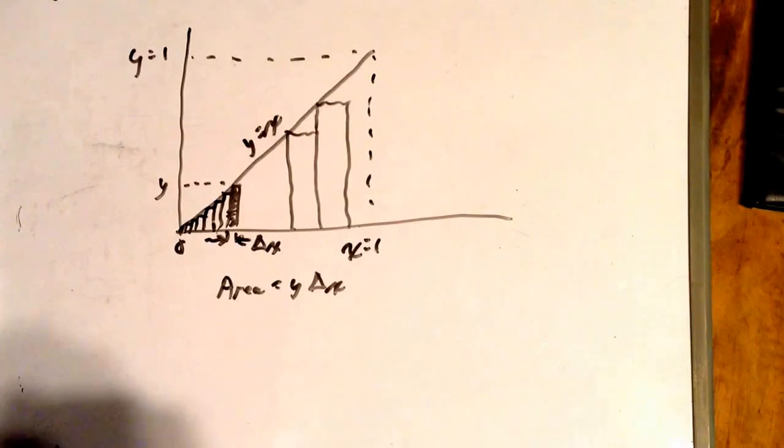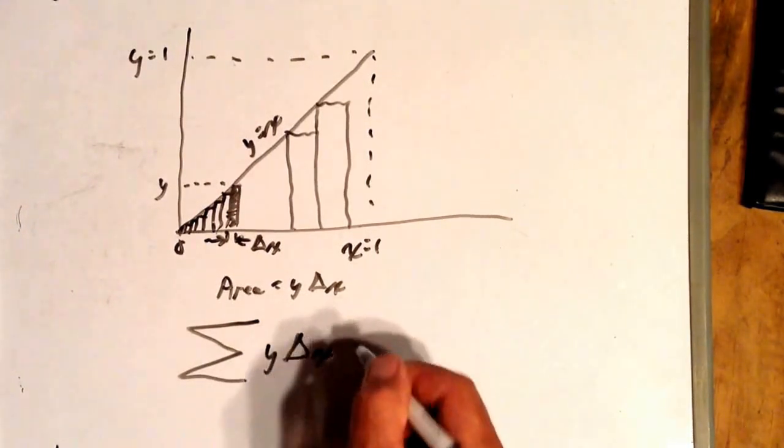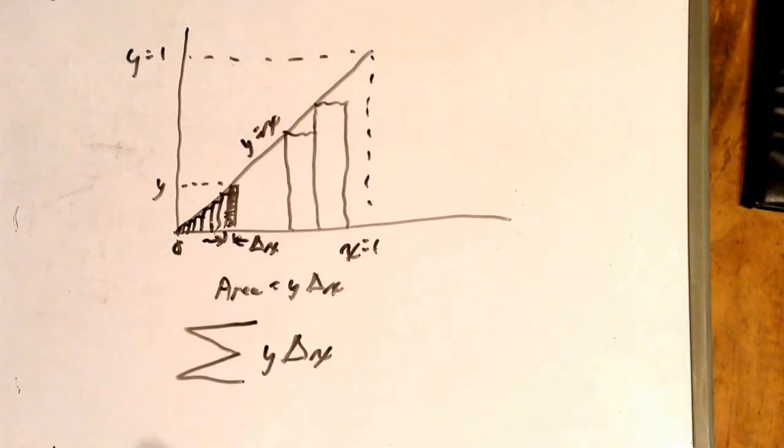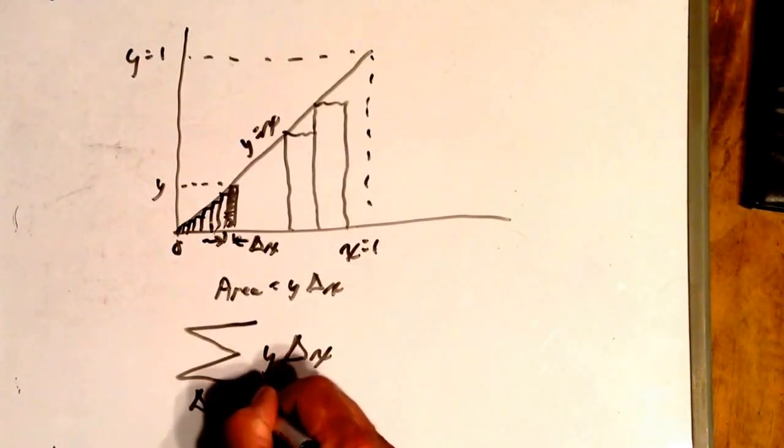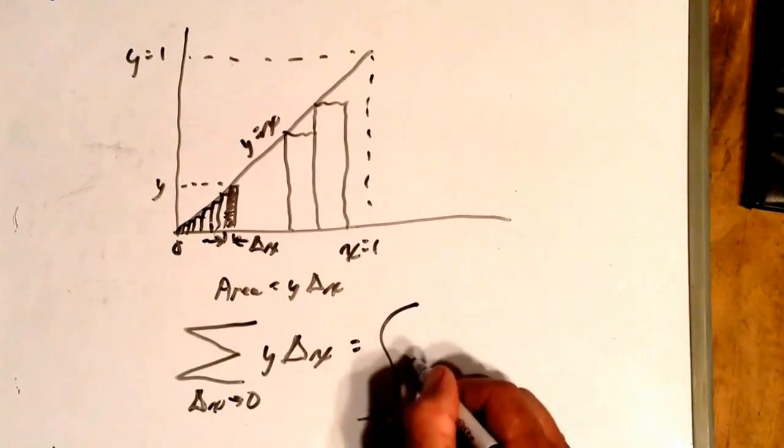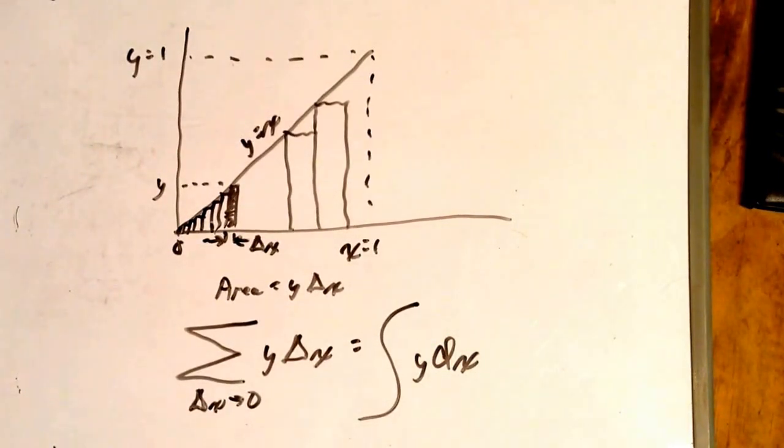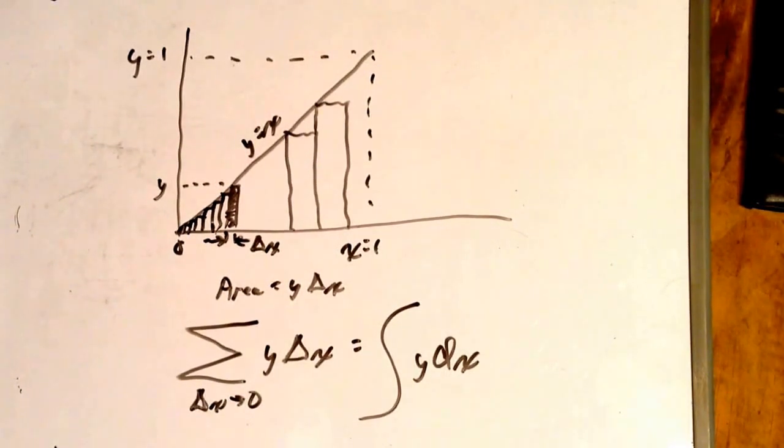The mathematical way of saying this is the sum of y delta x, which means adding up all these little areas of all these delta x's as delta x approaches zero, is equal to the integral of y dx. This Greek letter sigma here is used to mean the sum of. And this symbol, looks like a giant s, is used to mean the integral of. So the sum of all these infinitely narrow slivers areas equals the integral of y dx. Think of dx as an infinitely small delta x.